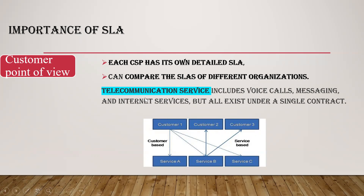For example, take telecommunication services. Telecommunication is an industry which owns the SLA — the service level agreement — between the customer and the CSP, the cloud service provider. This includes voice calls, messaging, internet services, storage services, and storage of database. All that information will be completely provided in the SLA and given as a single contract. In telecommunication, it is not that only one customer accesses voice call or messaging — it can be N number of customers using different services provided by the service provider. For each of those services, a separate SLA will be provided.